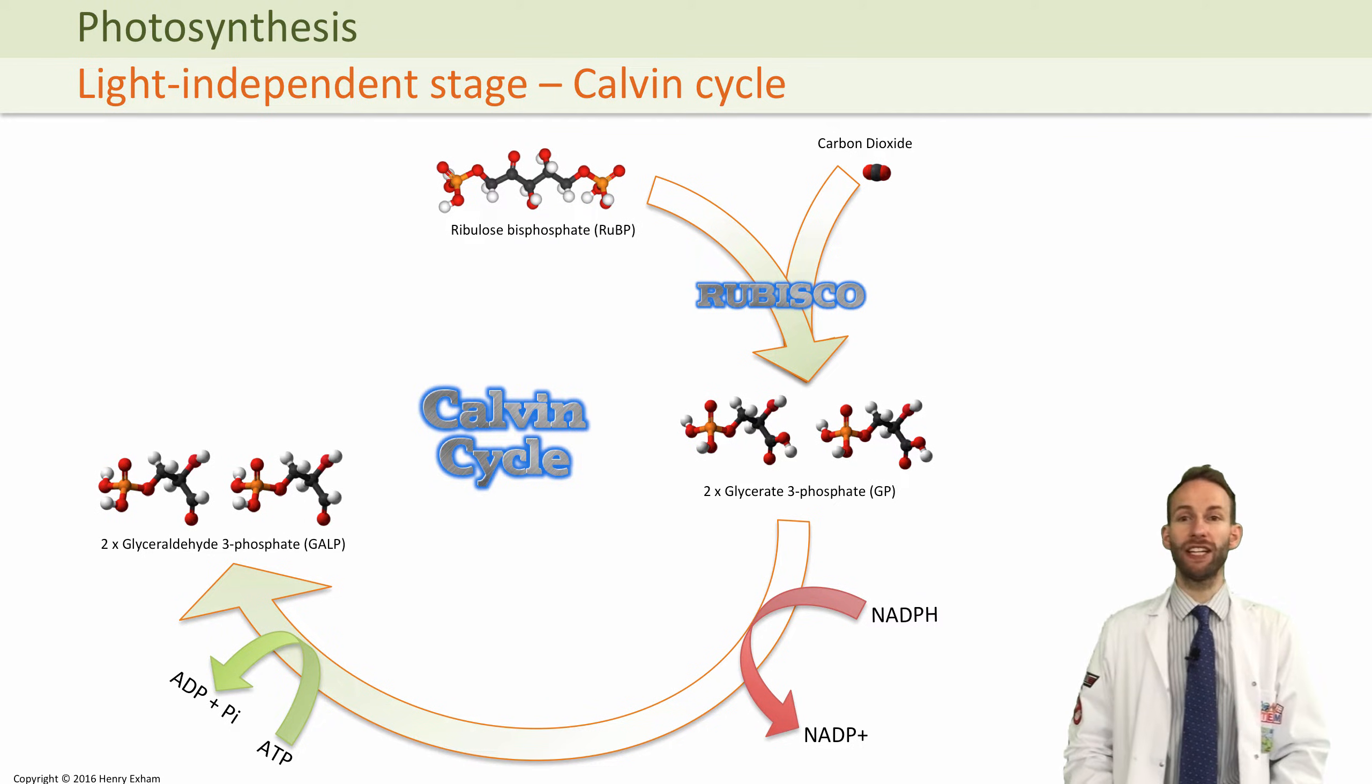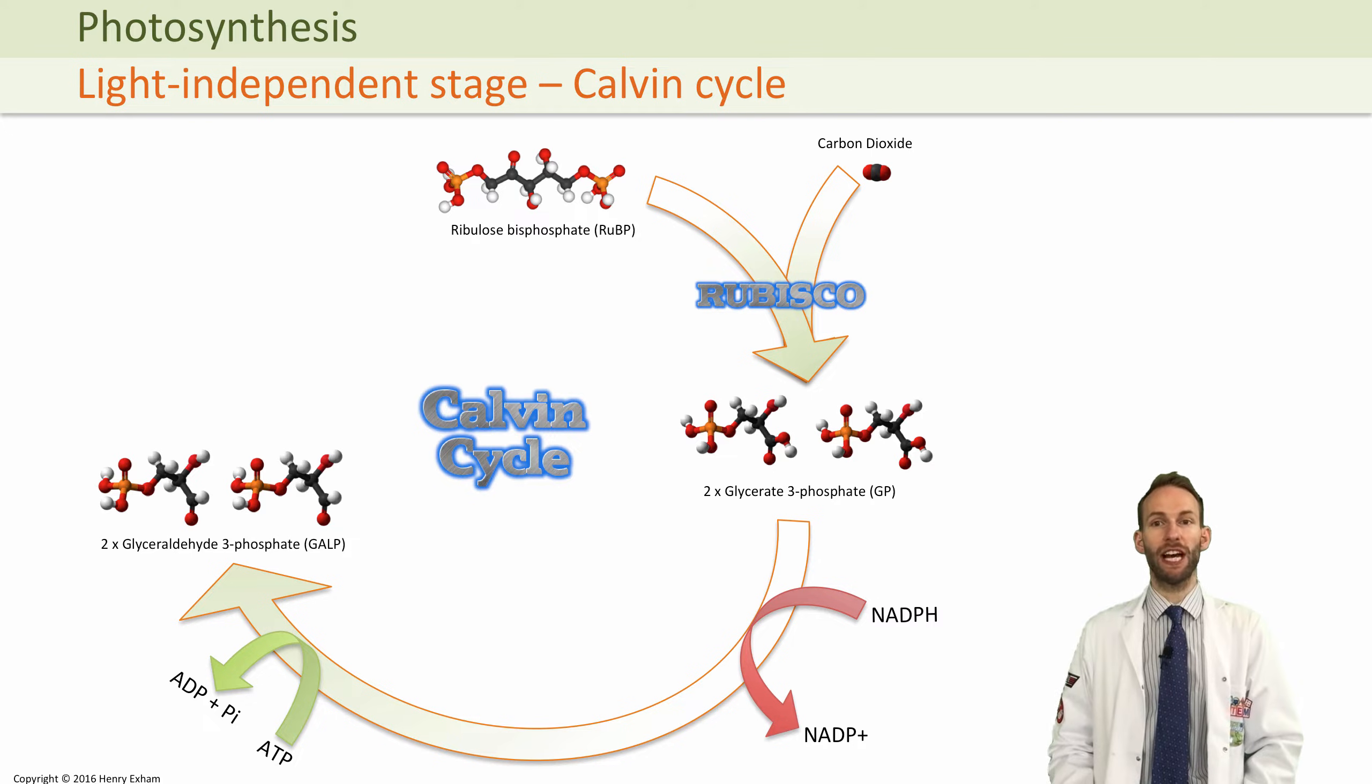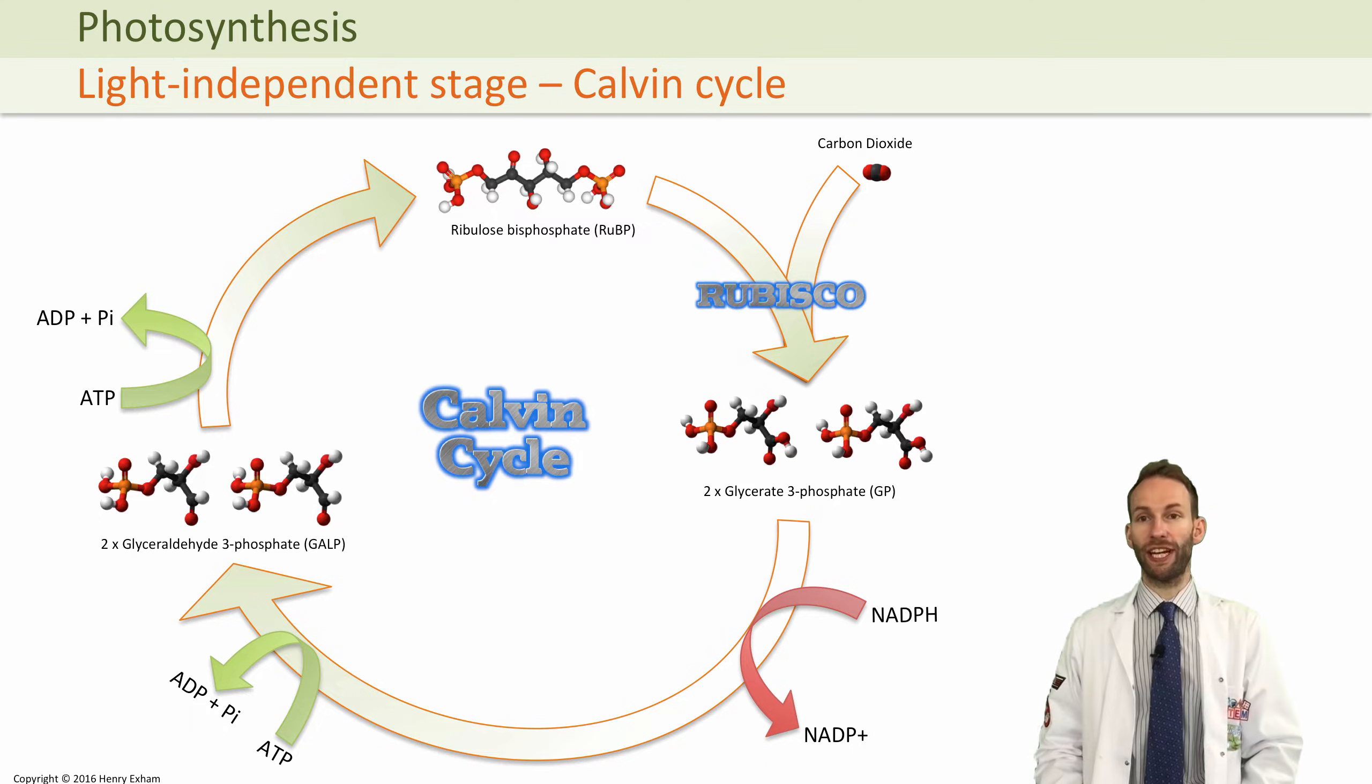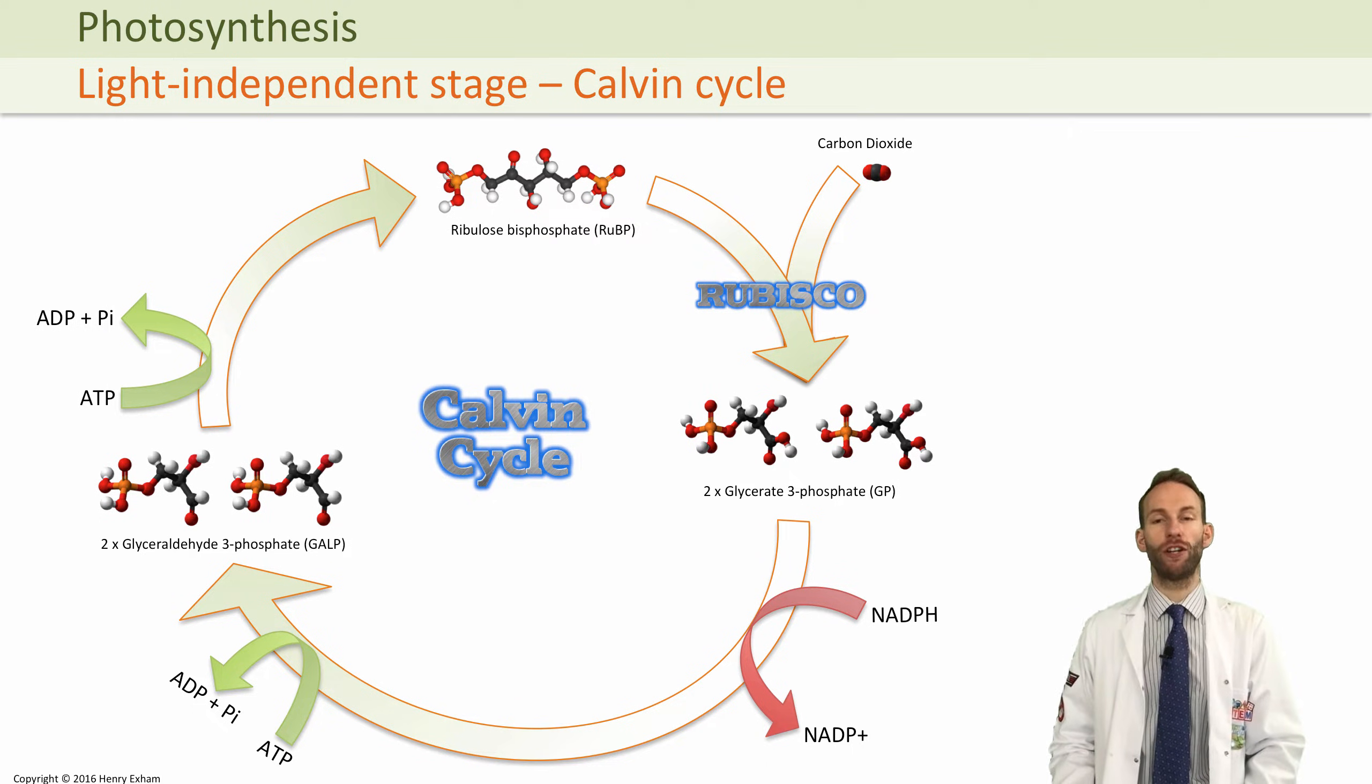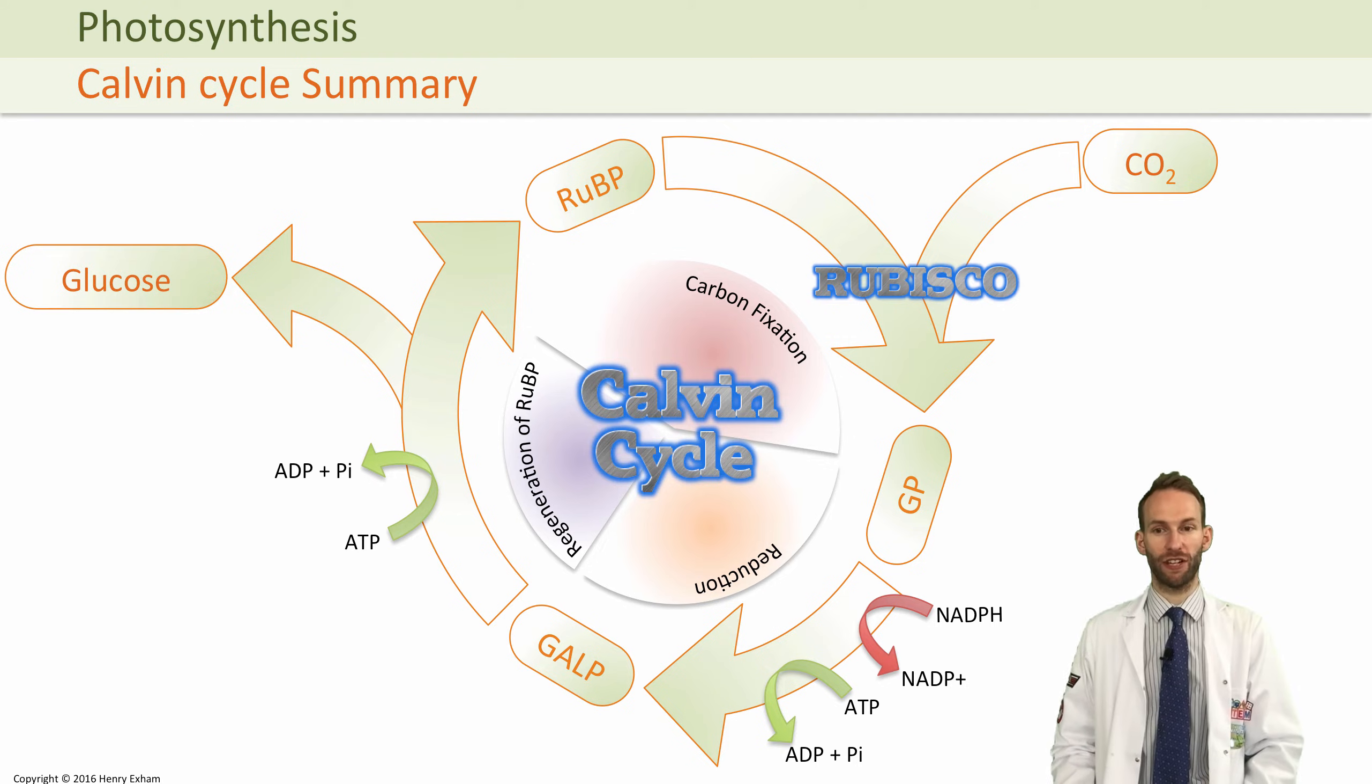This GALP can be converted with ATP back into the RUBP where we started, and that completes the cycle. But not all the GALP goes back to form RUBP. Some of it ends up being turned into glucose, which was the whole purpose of photosynthesis.